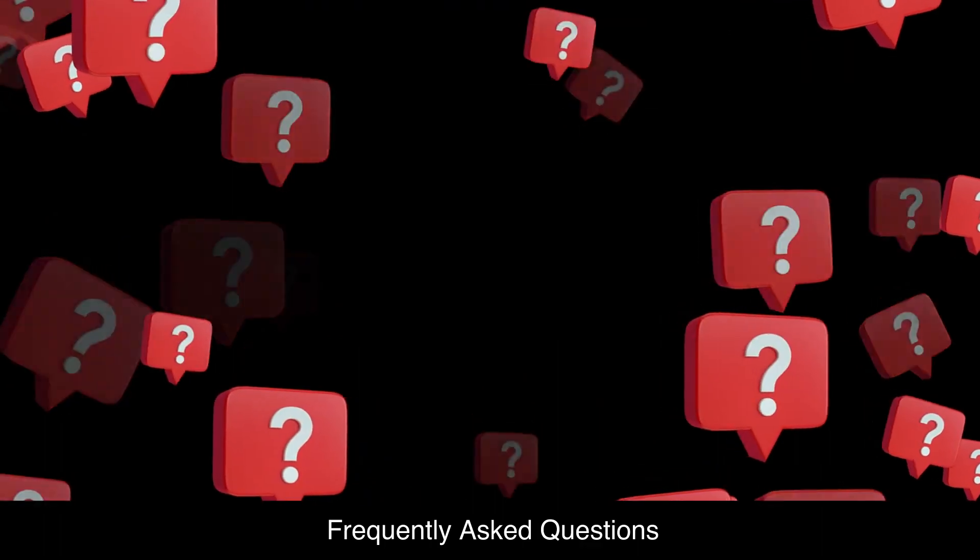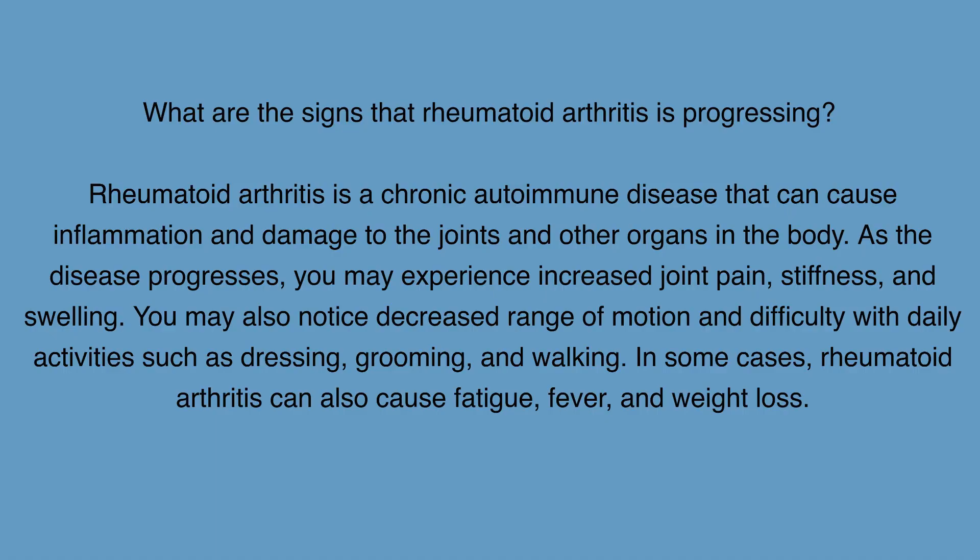Frequently Asked Questions: What are the signs that rheumatoid arthritis is progressing? Rheumatoid arthritis is a chronic autoimmune disease that can cause inflammation and damage to the joints and other organs in the body. As the disease progresses, you may experience increased joint pain, stiffness, and swelling. You may also notice decreased range of motion and difficulty with daily activities such as dressing, grooming, and walking. In some cases, RA can also cause fatigue, fever, and weight loss.